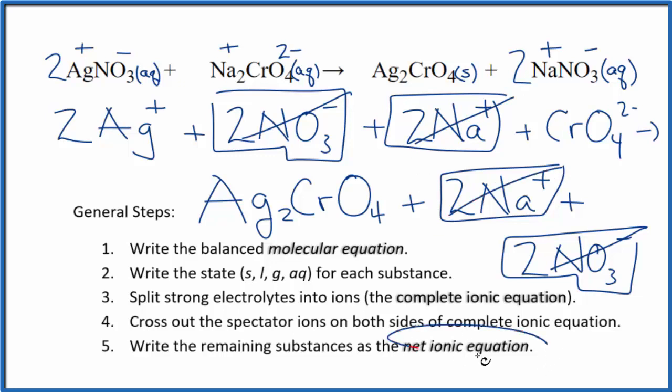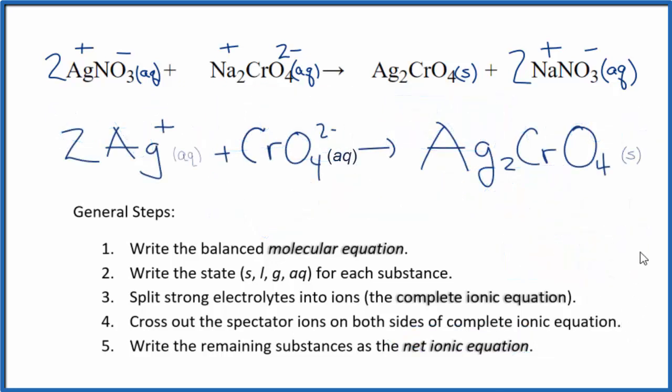What's left, that's the net ionic equation for AgNO3 plus Na2CrO4. I'll clean this up. We'll write the states in. We'll have our net ionic equation. And this is the balanced net ionic equation for silver nitrate plus sodium chromate.